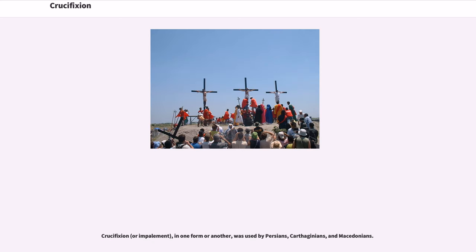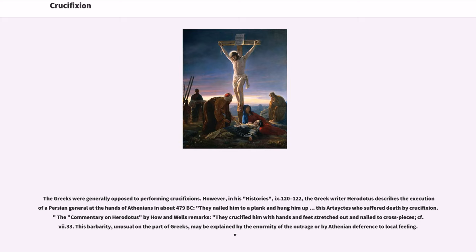Crucifixion, or impalement, in one form or another, was used by Persians, Carthaginians, and Macedonians. The Greeks were generally opposed to performing crucifixions. However, in his Histories (9.120–122), the Greek writer Herodotus describes the execution of a Persian general at the hands of Athenians in about 479 BC — they nailed him to a plank and hung him up — as a case of death by crucifixion.